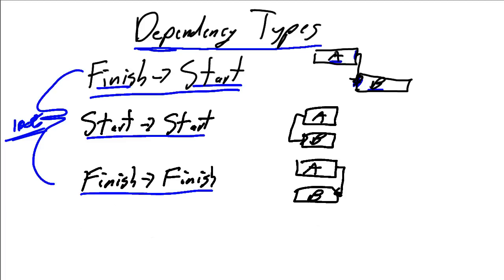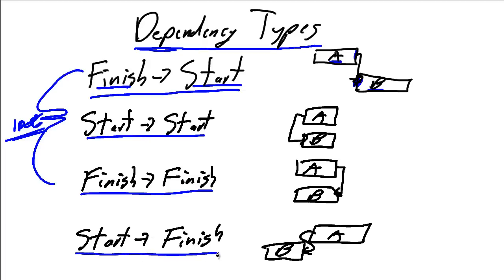There is a fourth type that you need to be aware of. The fourth and final dependency type is called Start-to-Finish. In this scenario, B is technically defined as the successor, but B cannot finish until Task A starts.